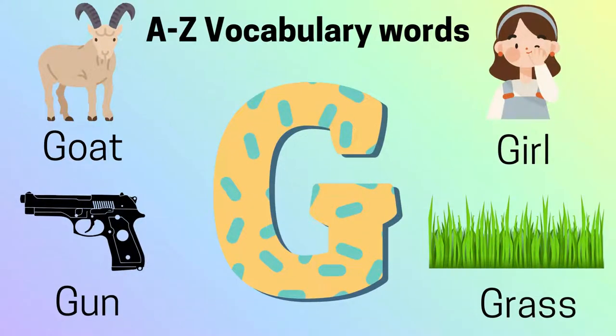Letter G. G-O-A-T, Goat. G-U-N, Gun. G-I-R-L, Girl. G-R-A-S-S, Grass.